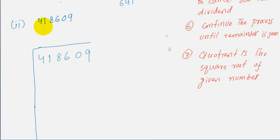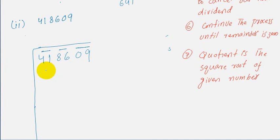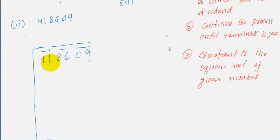We have to find the square root of 418609. Again, the first step is pairing, starting from the right. The first pair is 09, then 86, and then 41. We find the greatest integer whose square is less than or equal to 41. Since 6 squared is 36 and 7 squared is 49 which is greater than 41, we choose 6 as our first divisor.